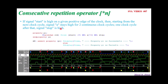Let's try to understand the consecutive repetition operator, represented by [*n], where n represents the number of clock cycles. This consecutive repetition operator allows the user to specify that a signal or a sequence will match continuously for the number of clock cycles specified. Using the same example: if the signal start is high on a given passage of the clock, then from the next clock cycle, signal A stays high for two continuous clock cycles, and one clock cycle after that, signal stop is high. We write this using the consecutive repetition operator in the property definition, asserting it with our own custom message.